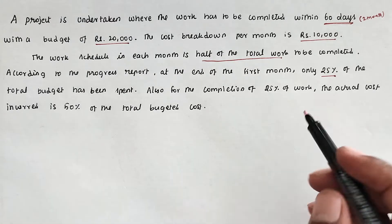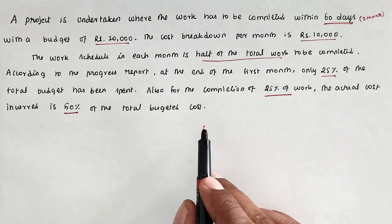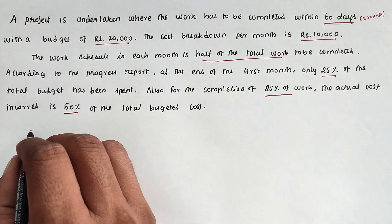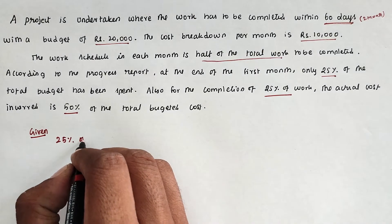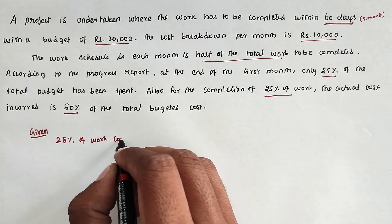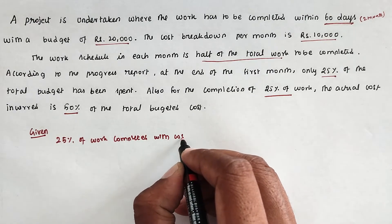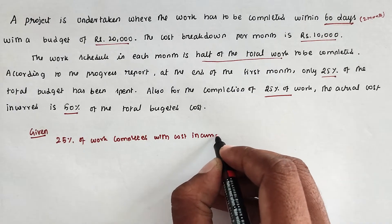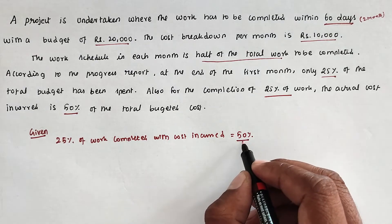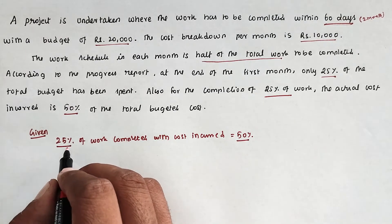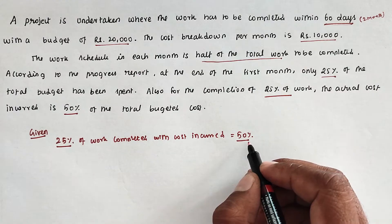The completion stands at 25% of all work, and the actual cost incurred is 50% of the total budget. So in summary: only 25% of work is completed, but we have utilized 50% of the total budget.